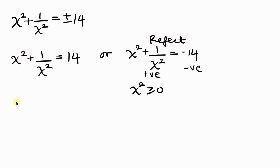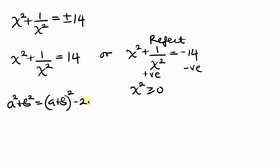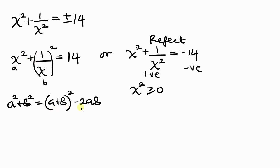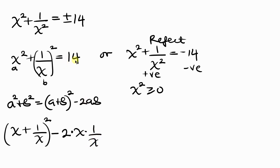We focus on x squared plus 1 over x squared equal to 14 and apply the same identity again: a squared plus b squared equals a plus b all raised to the power of 2, minus 2ab. Here a is x and b is 1 over x. So we write x plus 1 over x, all raised to the power of 2, minus 2 times x times 1 over x, equal to 14.